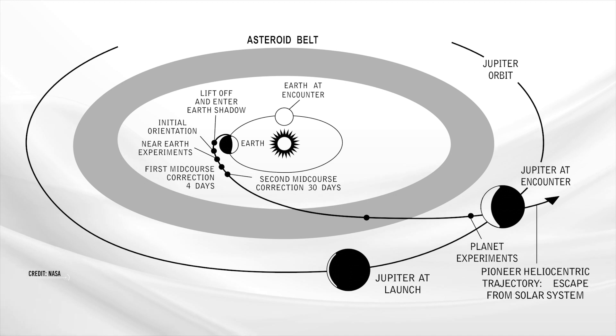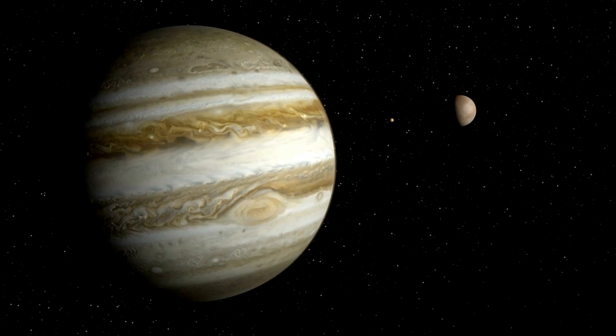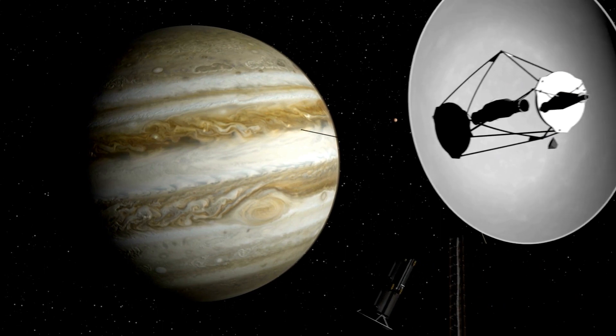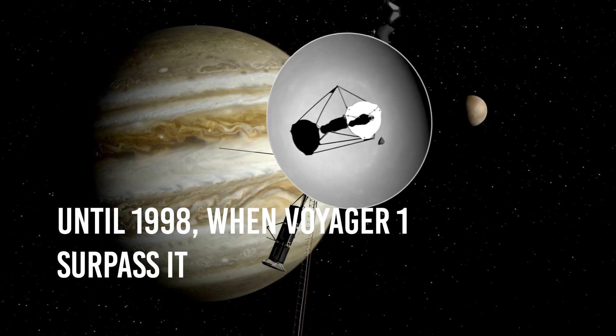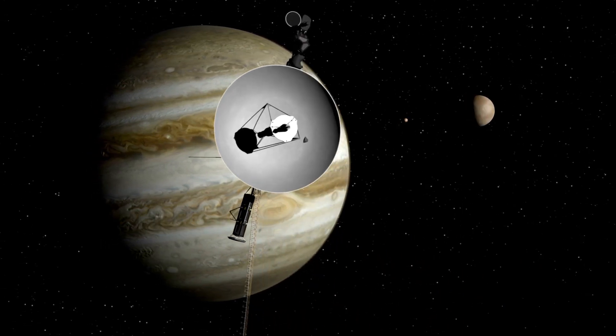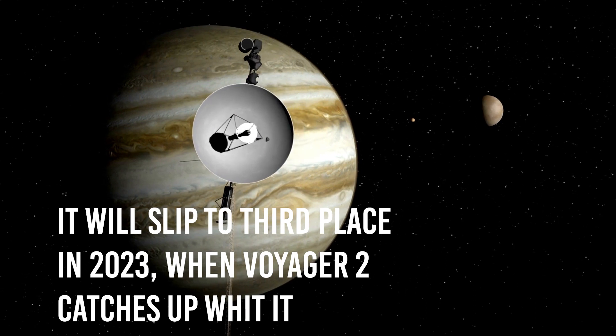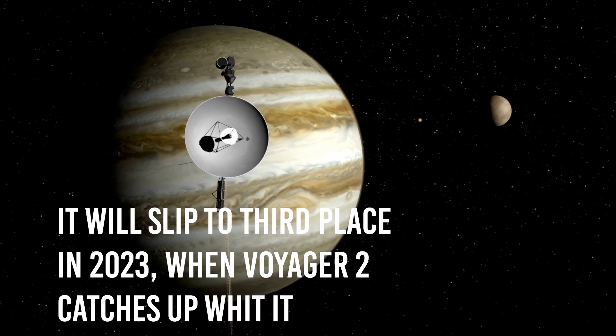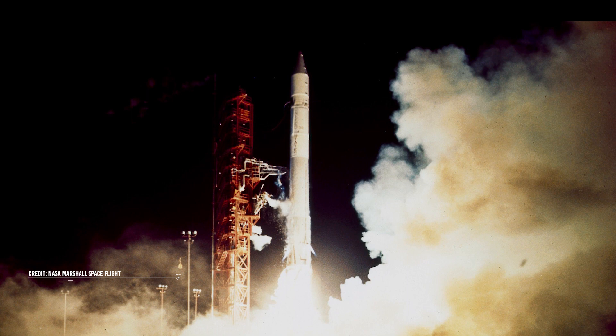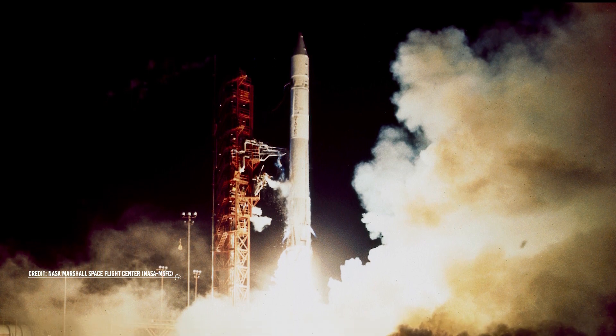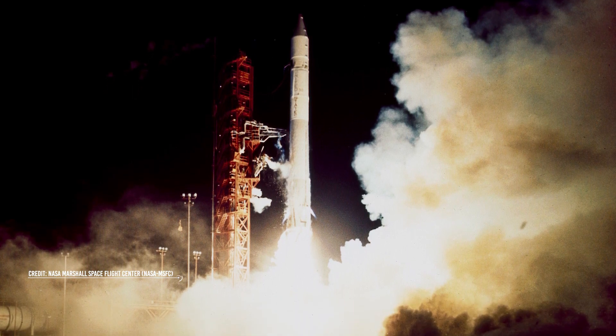After becoming the first spacecraft to reach Jupiter in late 1973, it went on to become the first spacecraft in the solar system to attain escape velocity. It was our most distant spacecraft until 1998, when Voyager 1 surpassed it, and it will slip into third place in 2023, when Voyager 2 catches up with it as well. Pioneer 11, which was launched in 1973, is also leaving the solar system.